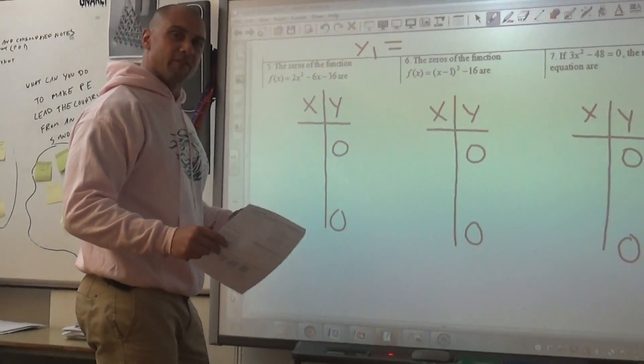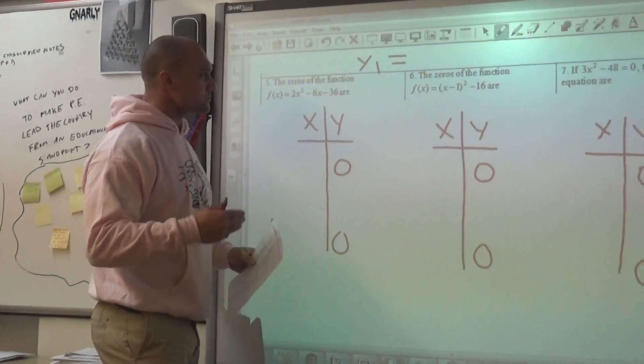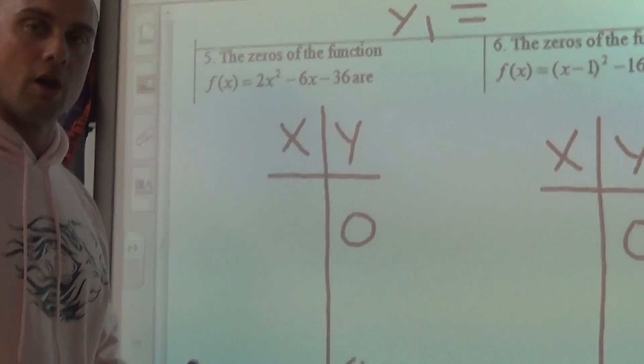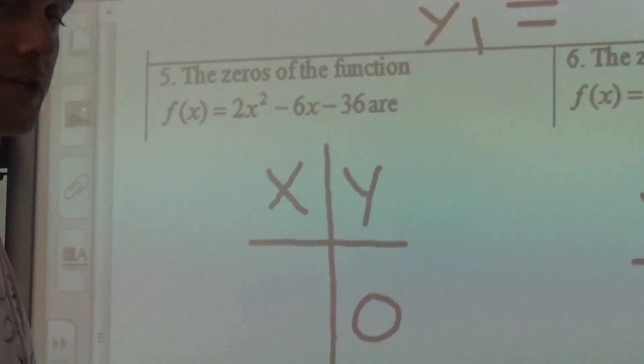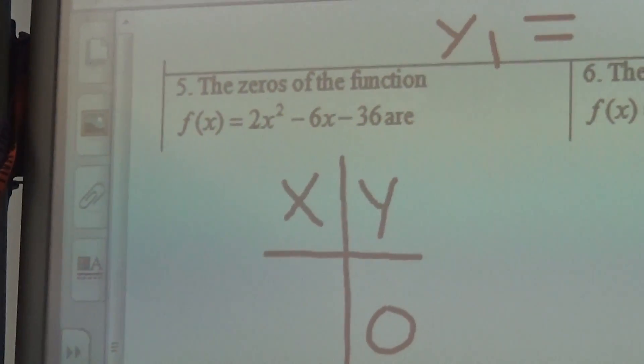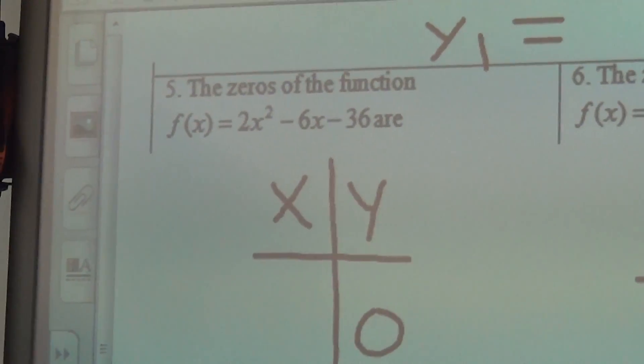All right, for numbers 5, 6, and 7, I would like you all to have your calculator handy, following along with your graphing calculator as I do this. So in each of these, we're going to use the table method to find the zeros of each of these functions.